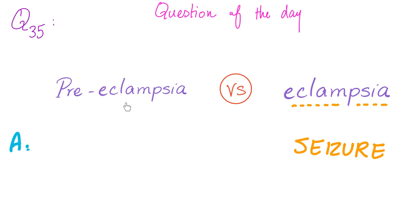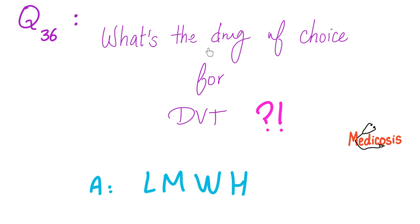What is the difference between preeclampsia and eclampsia? Eclampsia has seizure, but preeclampsia does not. However, both can have hypertension, proteinuria, and end organ damage. What is the drug of choice for DVT? It's low molecular weight heparin — even better than unfractionated heparin. What if HIT happened? Stop the low molecular weight heparin and treat with argatroban.